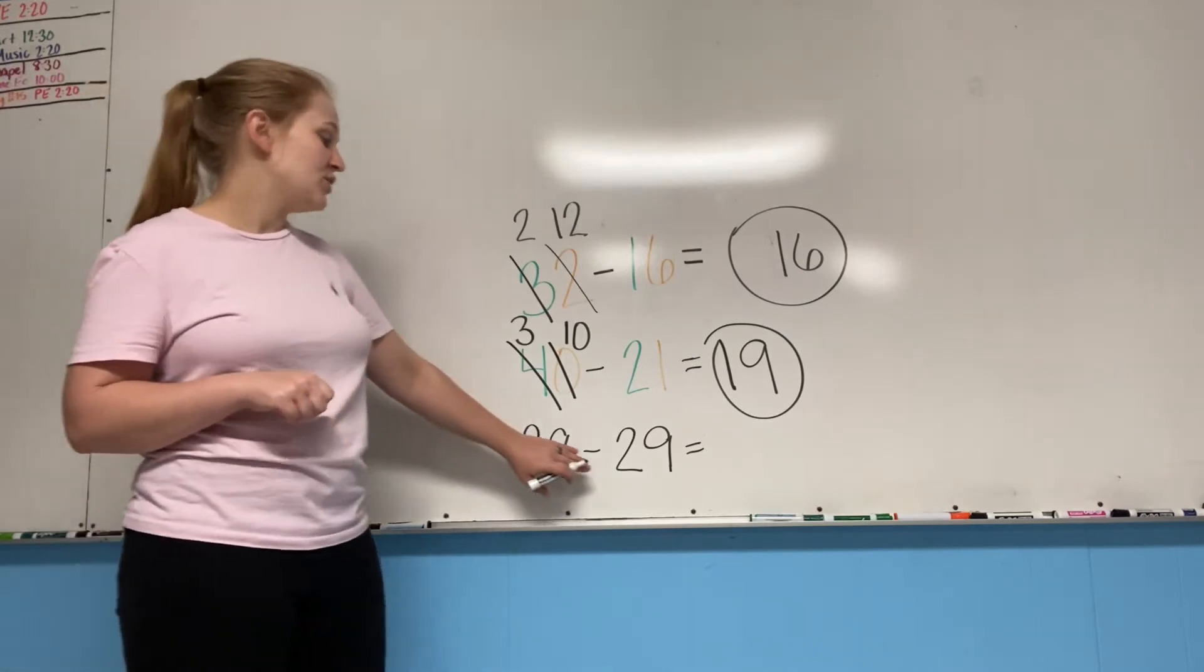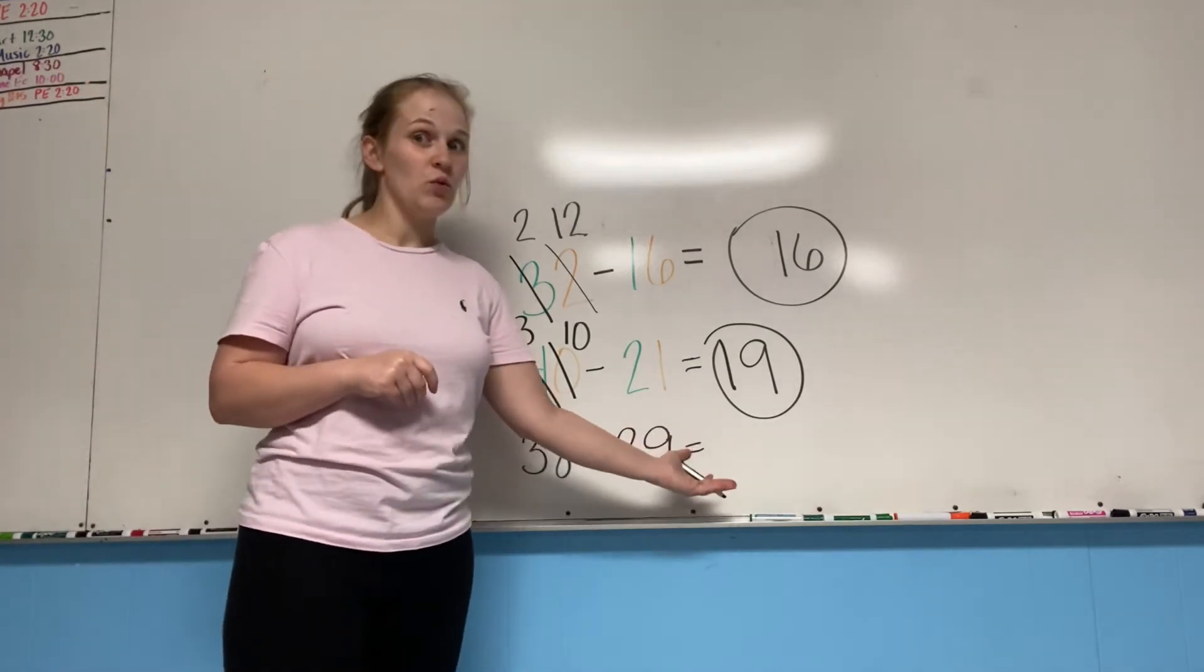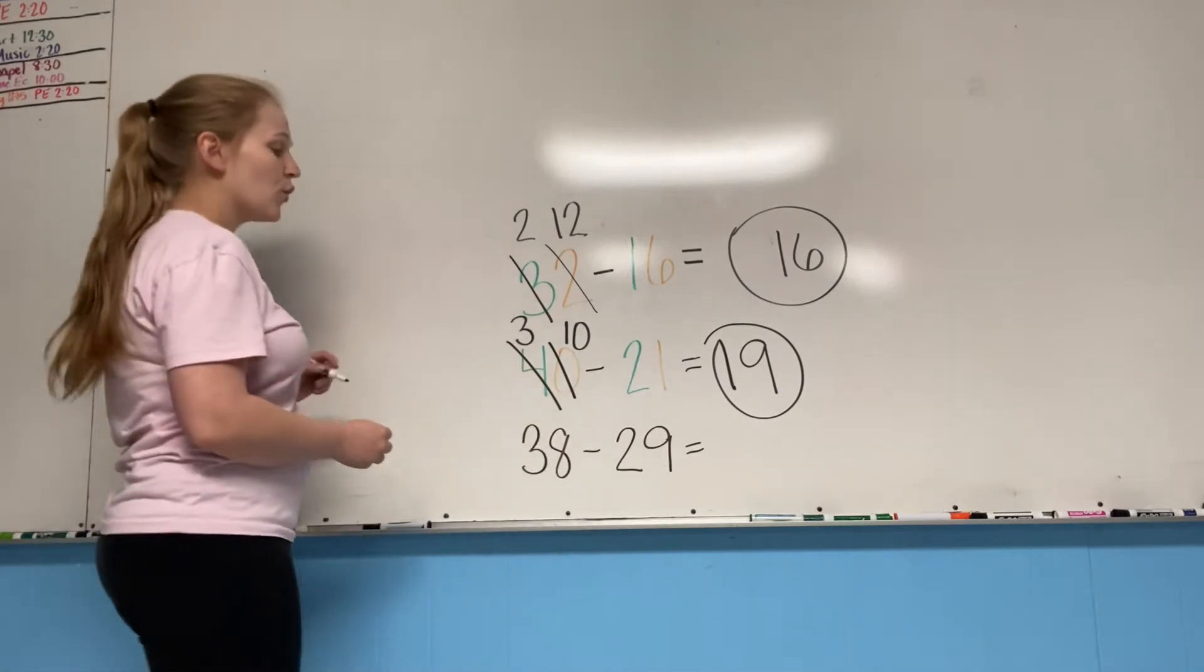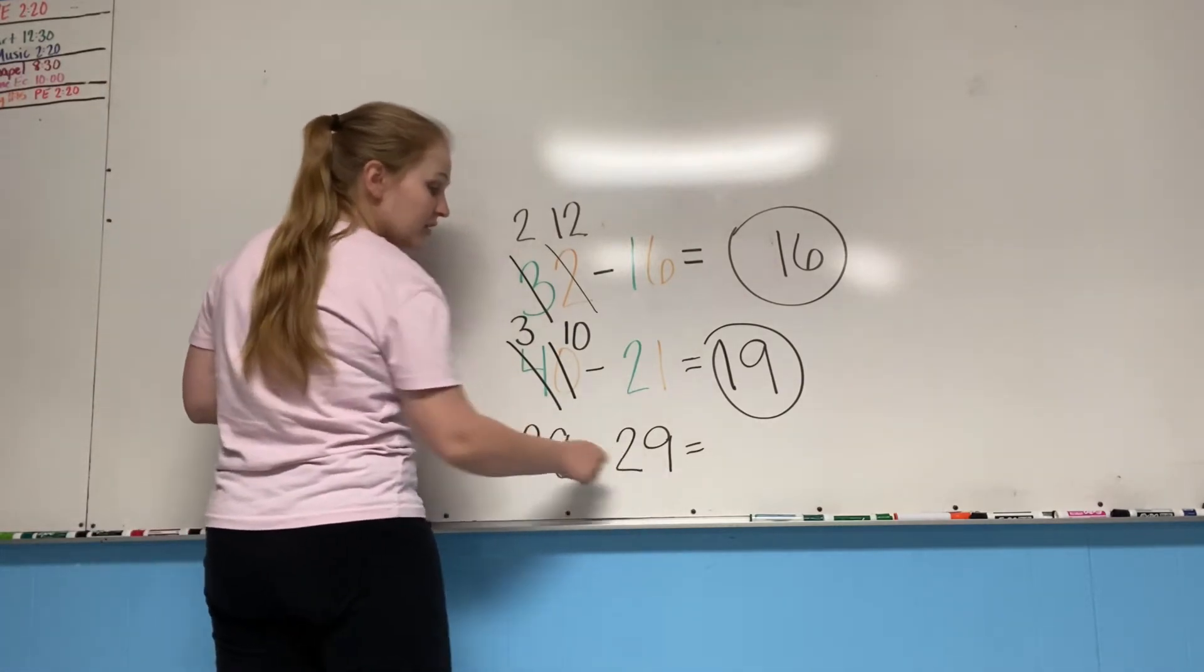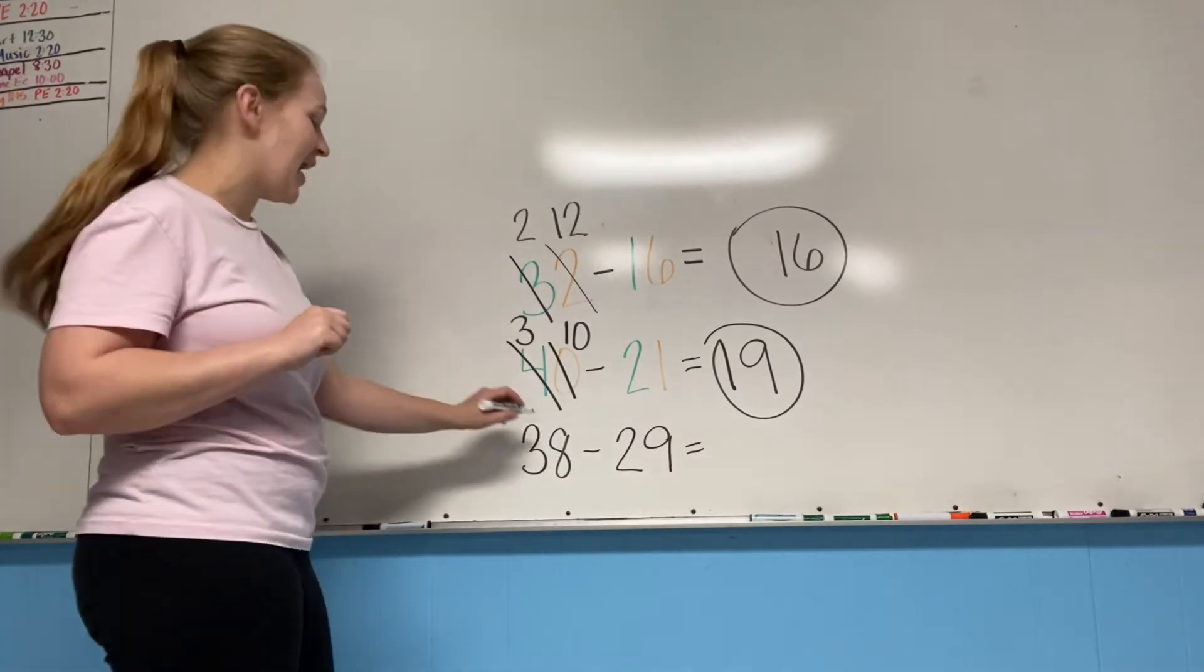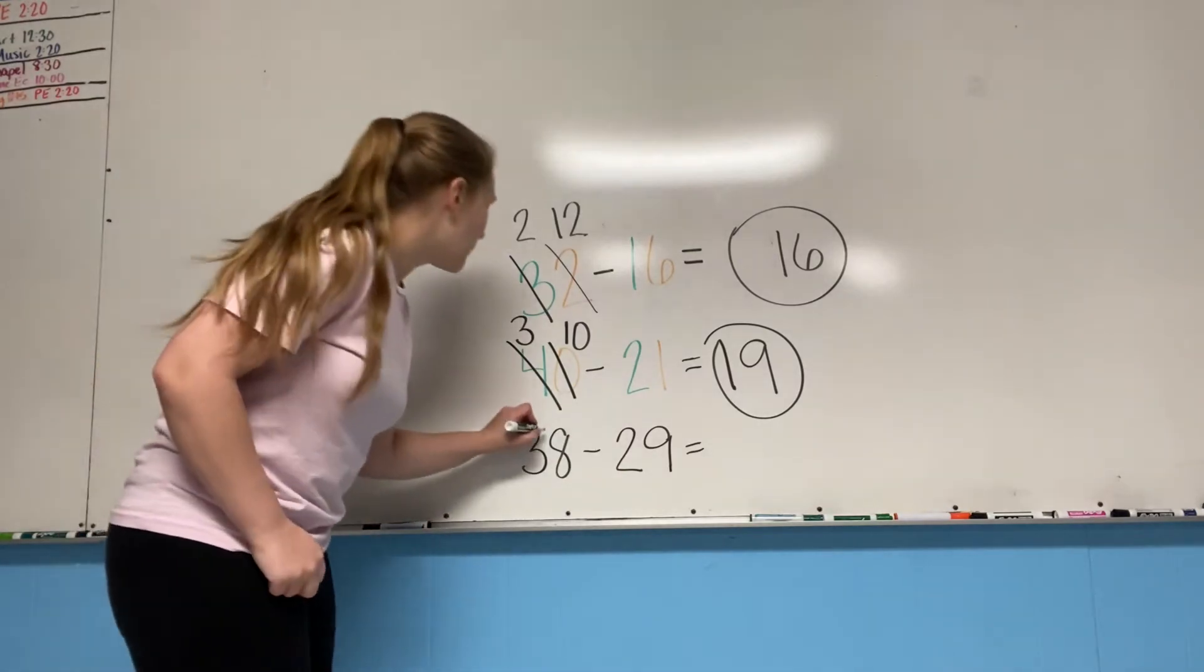38 minus 29 equals what? So let's start with our ones place. Eight minus nine. You can't do it. That's right. Eight is too small. So we're going to borrow.